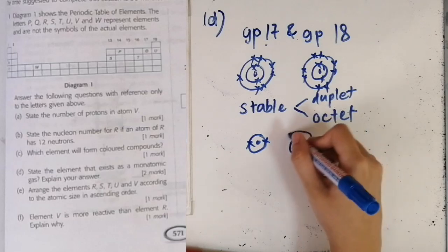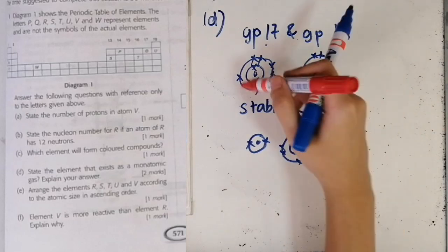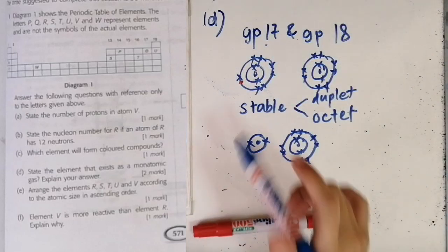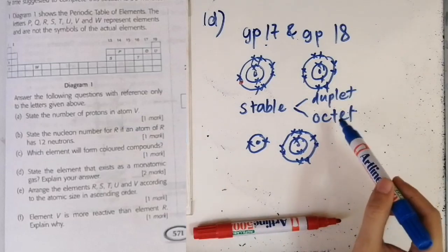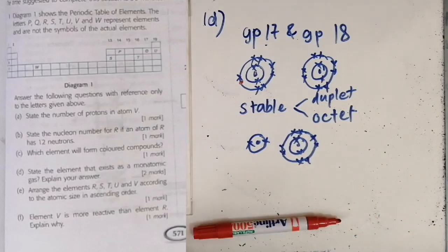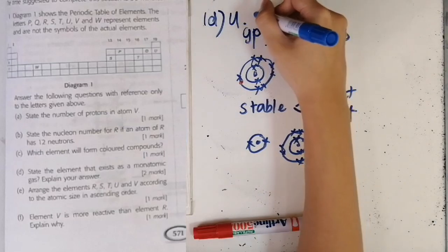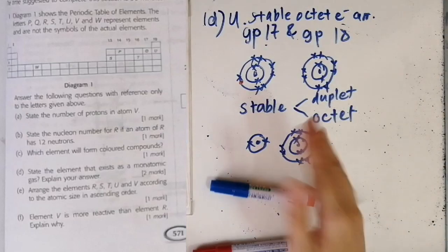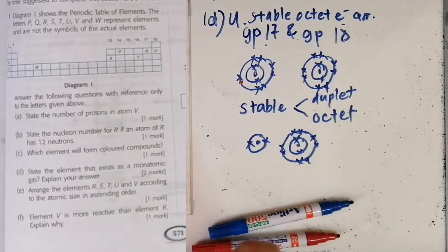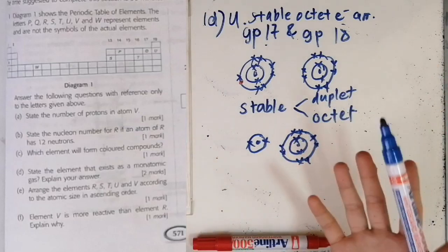If an element has more than one shell, it must have an octet arrangement to be stable. You cannot have empty spaces — there's supposed to be one more electron but there isn't, so group 17 is not stable. Group 18 on the other hand is stable because it has a complete octet electron arrangement. So the element that exists as a monoatomic gas would be from group 18, which is U. The answer is U because it has a stable octet electron arrangement.